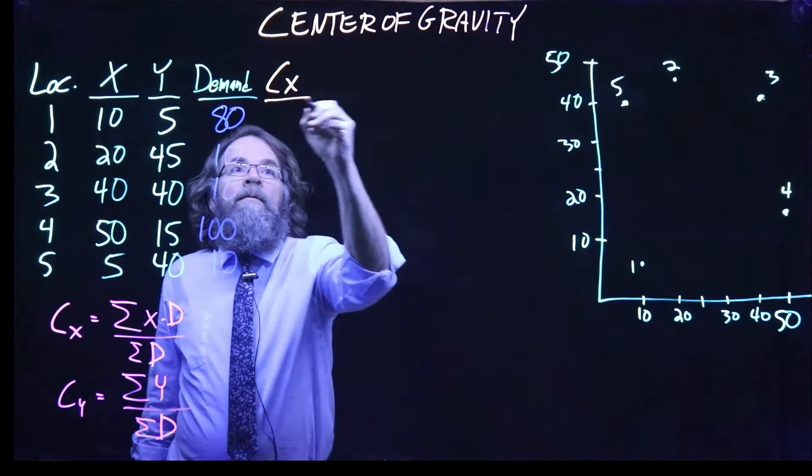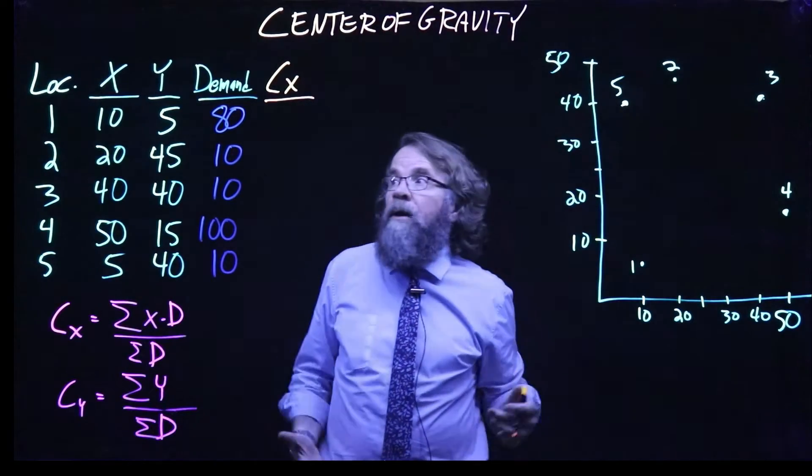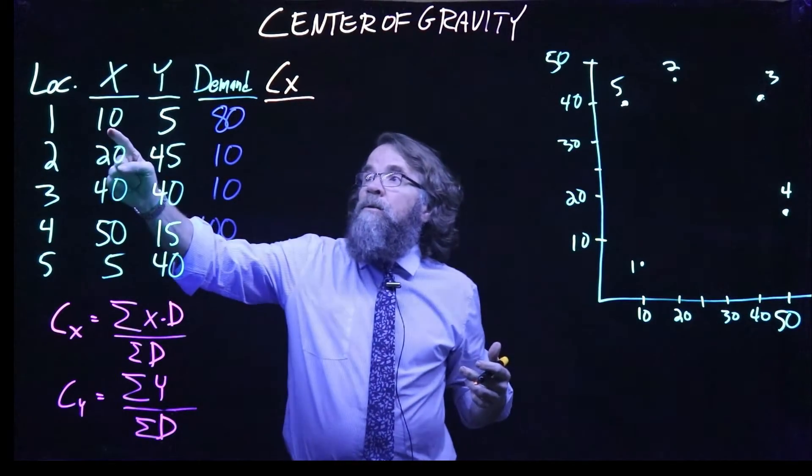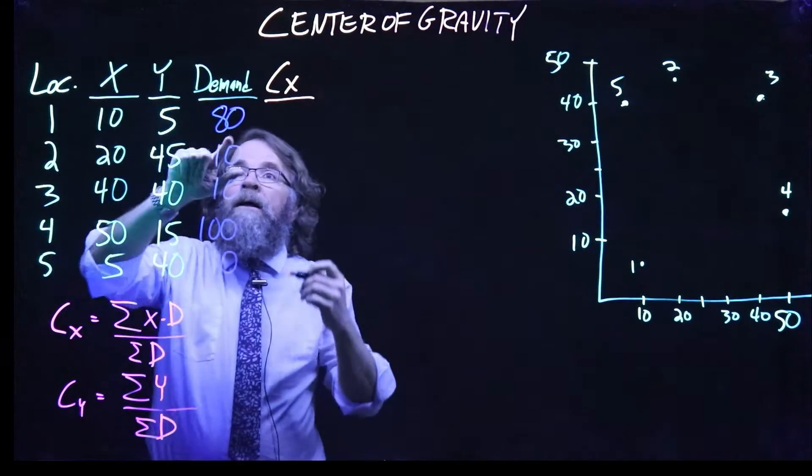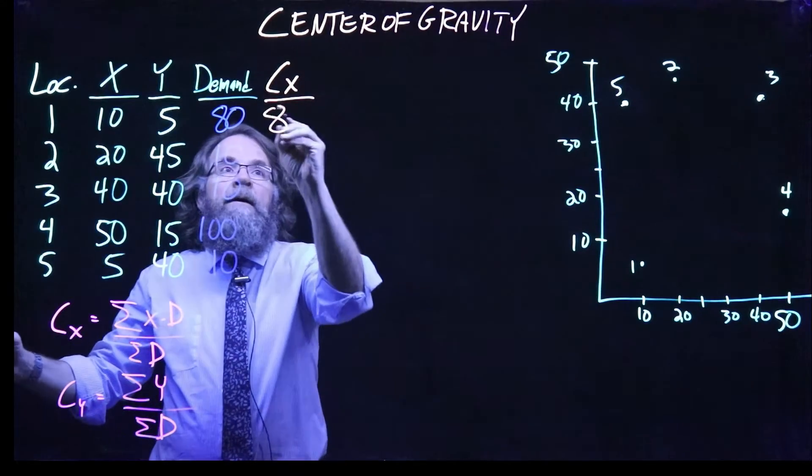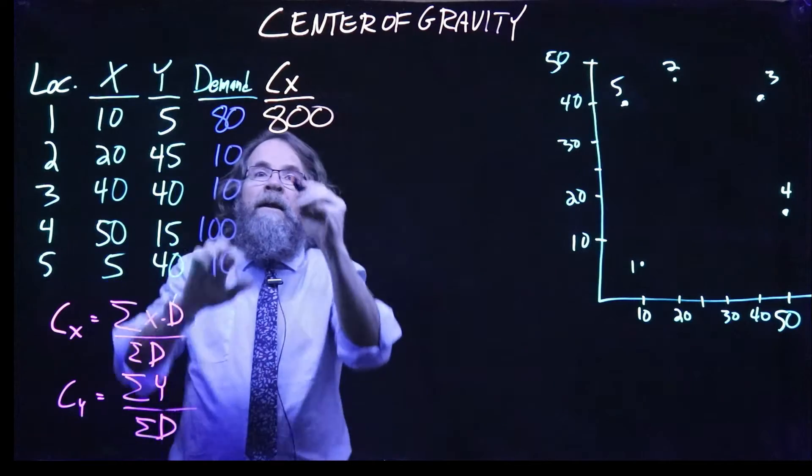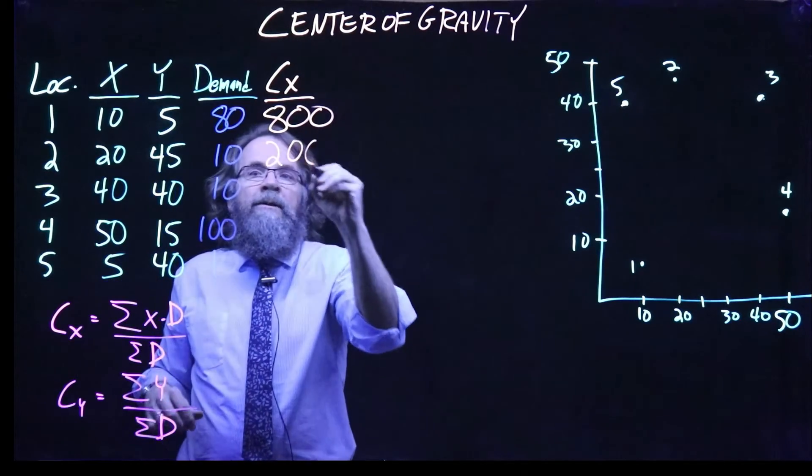On my calculation for getting the X value, like I said, take the X coordinate times the demand. So 10 times 80, that gives us 800. 20 times 10 gives us 200.